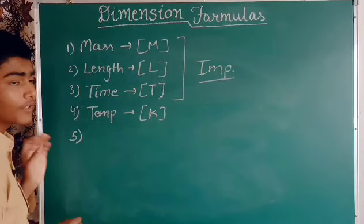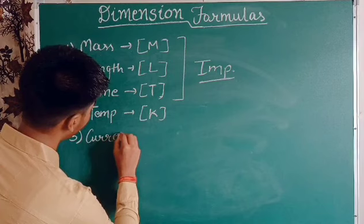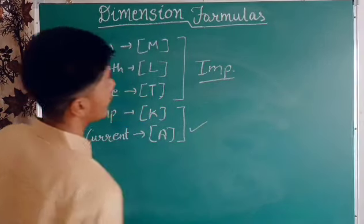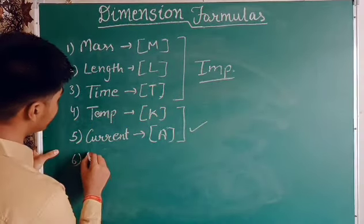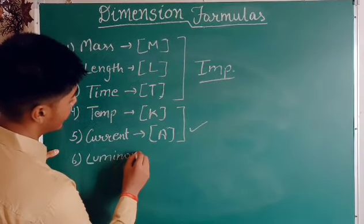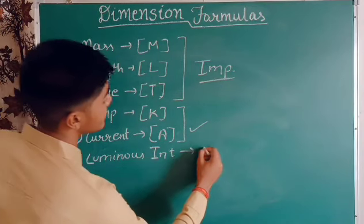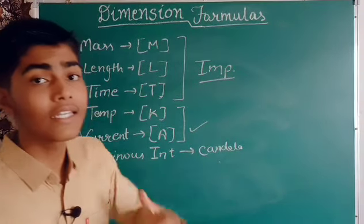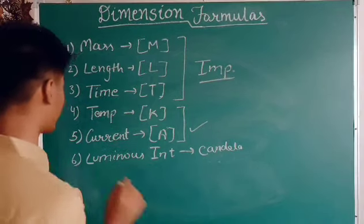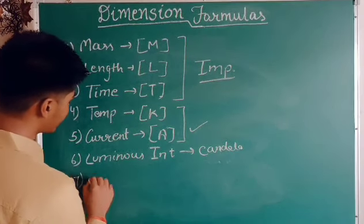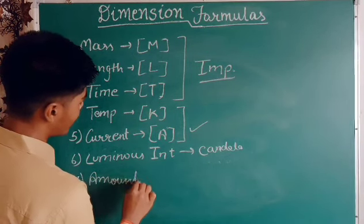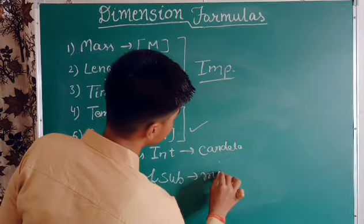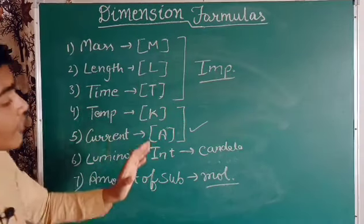The fourth quantity is temperature, represented by capital K. The fifth is current, represented by capital A (ampere). These are less important for our purposes. The sixth is luminous intensity, represented by candela — used to measure the luminous intensity of any source. The seventh is amount of substance, represented by mole.